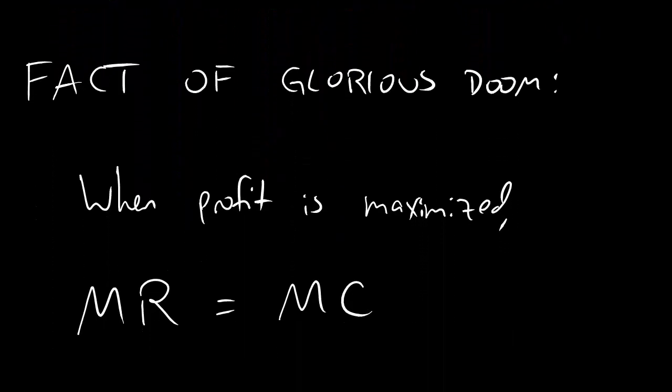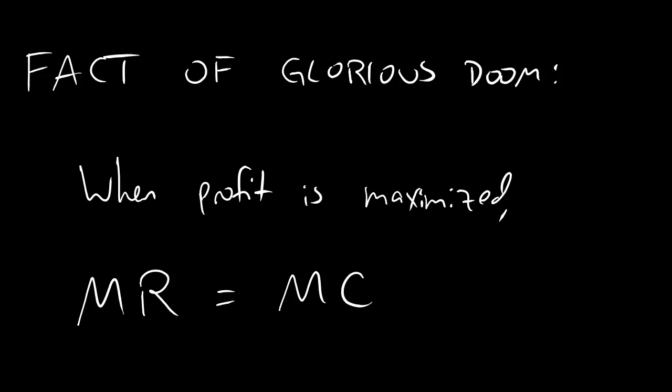And here is the fact of glorious doom that you will be using all over the place in section 2.5 and even later. It is this: when profit is maximized, the marginal revenue equals the marginal cost. And dudes, this is for a very simple reason that we don't have a lot of time to get into now. If you want to know why this fact is true, you're going to have to wait until you cover maxima and minima using derivatives. For now, you're just going to have to take my word for it. If you're looking to maximize profit, one thing that you want to find is when marginal revenue equals marginal cost.